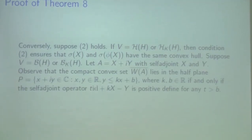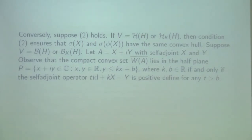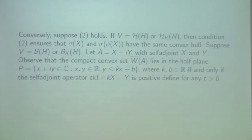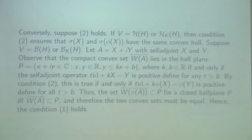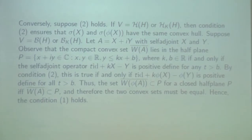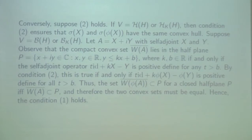Suppose V is one of the following spaces and that A has the form X plus Y, where X and Y are self-adjoint. It is enough to observe that the closure of W of A lies in a half-plane if and only if the appropriate expression is positive semi-definite. By condition number 2, this is equivalent to the identity plus phi of X minus phi of Y being positive semi-definite, and thus the closure of phi of A is contained in that region if and only if the closure of W of A is, giving us equality of the two convex sets. Hence the first condition holds.